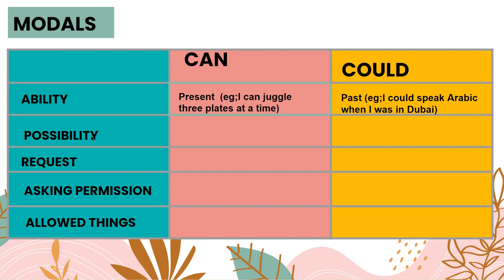The second way we can use can is for possibility in a general way. For example: They can catch the train if they leave now. There is a possibility that you can catch a train if you leave on time. That's how we make a general reference using can to show possibility.